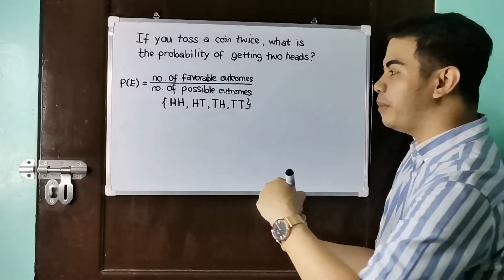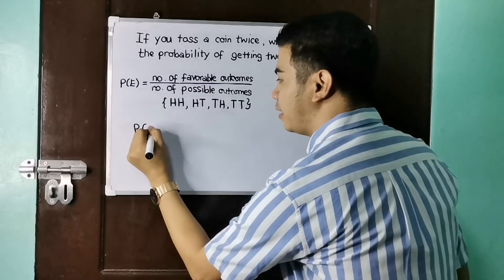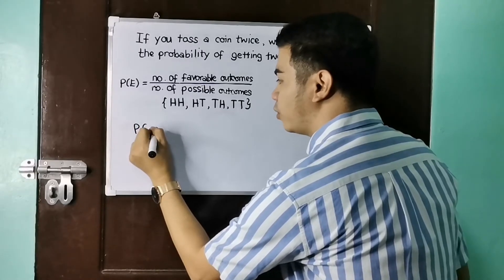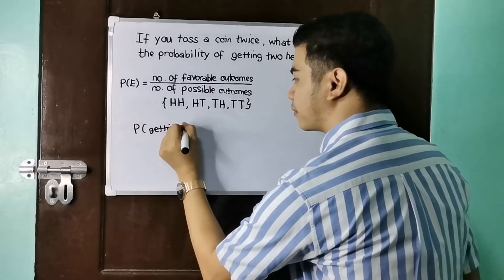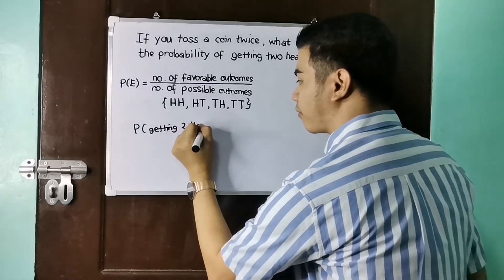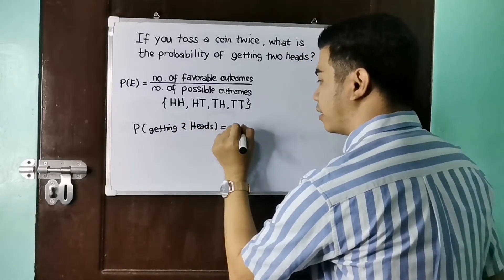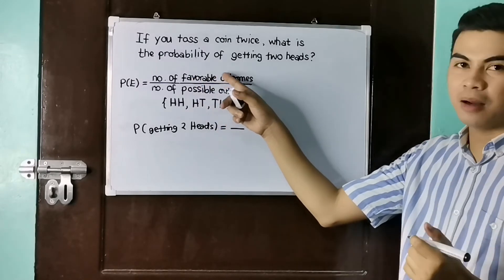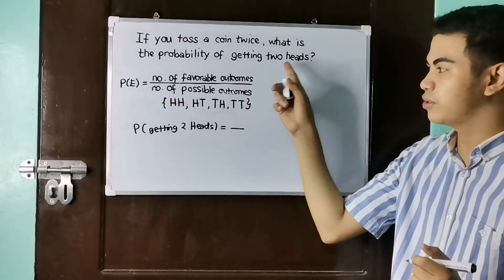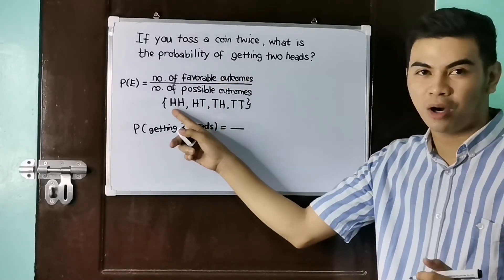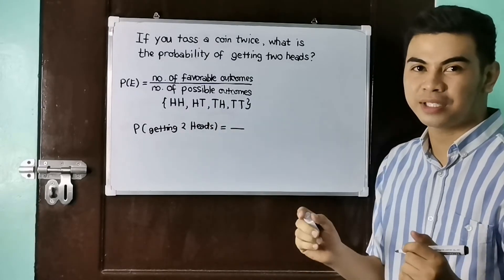So let us now get the probability of getting two heads. The number of favorable outcomes — since our event is getting two heads — there is only one, which is HH. So therefore, our numerator is one.